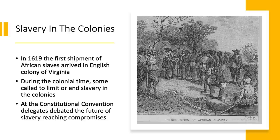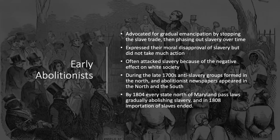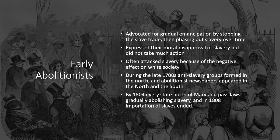From the start, slavery was an issue that divided Americans. Early abolitionists advocated for gradual emancipation — first stopping the slave trade, then phasing out slavery over time. Many saw signs that slavery would eventually disappear in the early years of the Republic. These abolitionists expressed moral disapproval but did not take much action. During the late 1700s, several anti-slavery groups formed in the North, and abolitionist newspapers appeared in both North and South. By 1804, every state north of Maryland passed laws gradually abolishing slavery, and in 1808 importation of slaves ended.